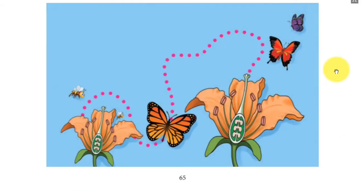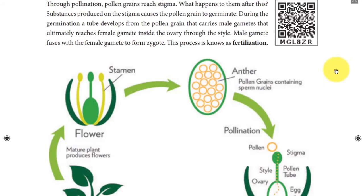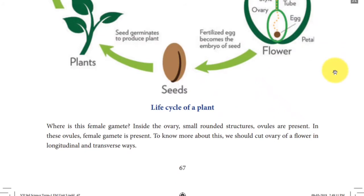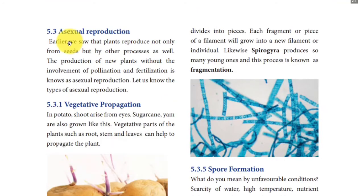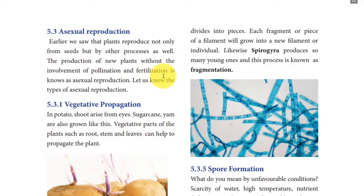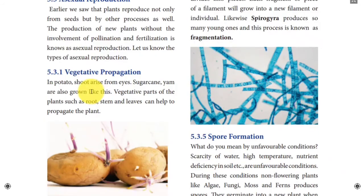The reproduction or propagation of plants not by means of seeds — that is the only difference between sexual and asexual reproduction. Plants reproduce not only by seeds but also by other processes. This production of new plants without involvement of pollination and fertilization is known as asexual reproduction. Here we are going to see four types, the first of which is vegetative reproduction.